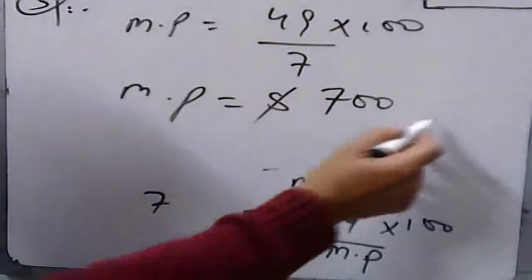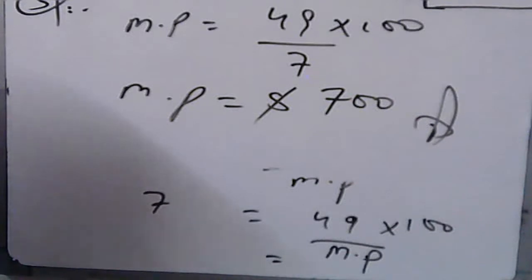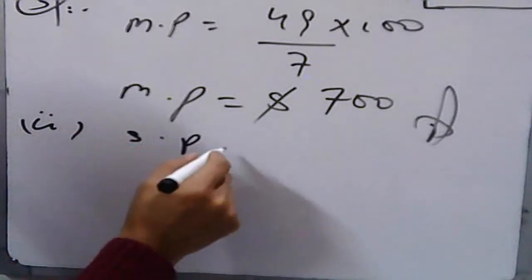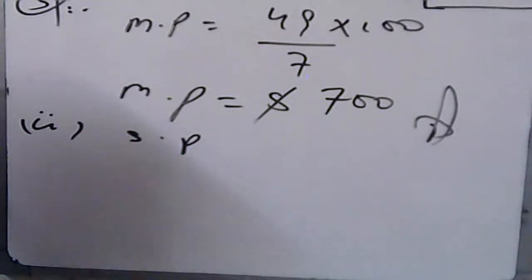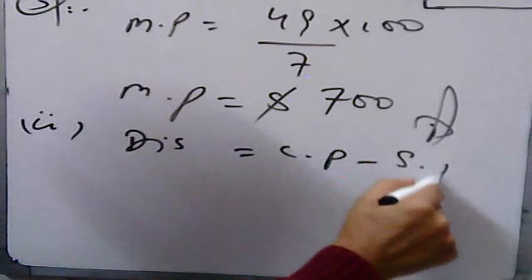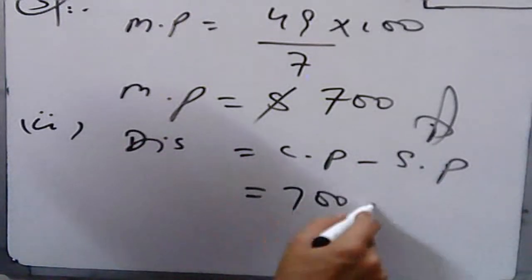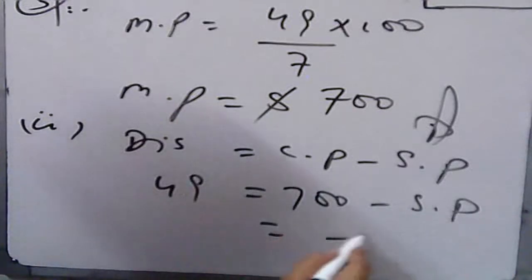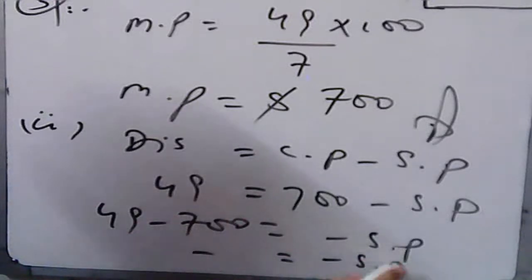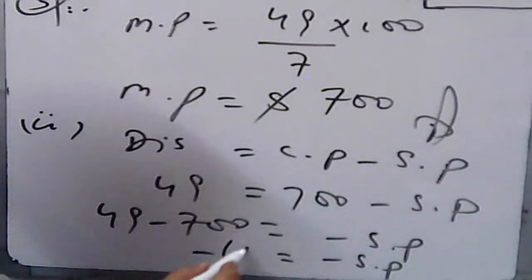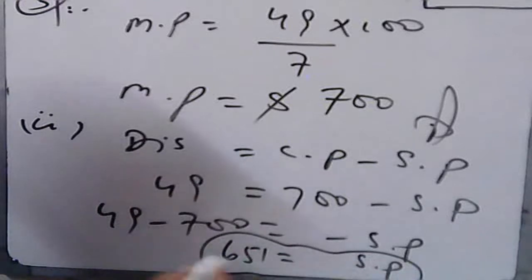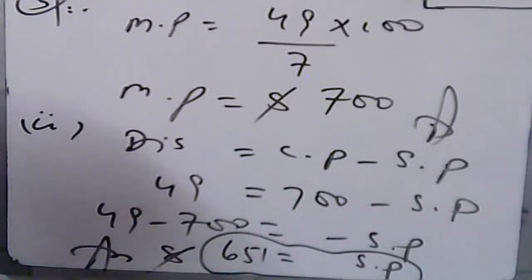Market price is $700. Now for the sale price, using Discount = Cost Price − Sale Price: cost price is $700, discount is $49, so Sale Price = 700 − 49 = $651. That is your required sale price.